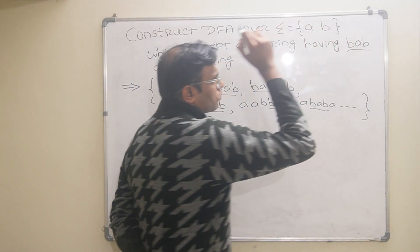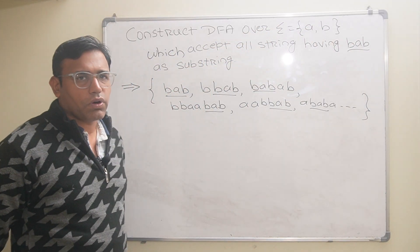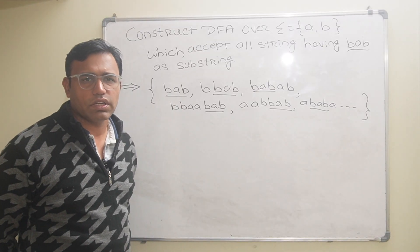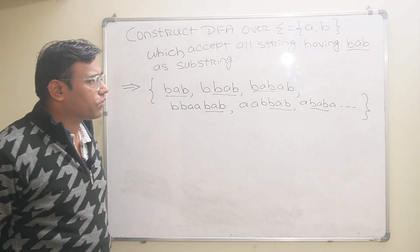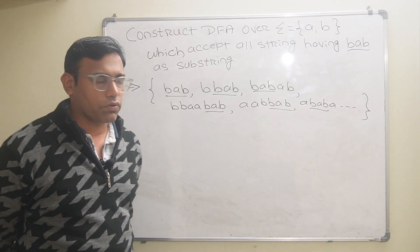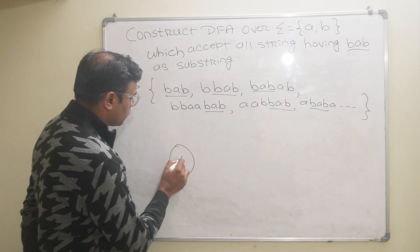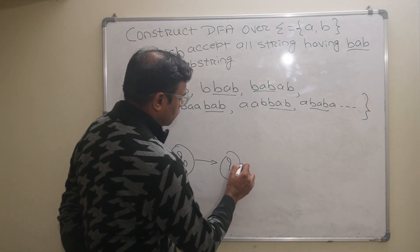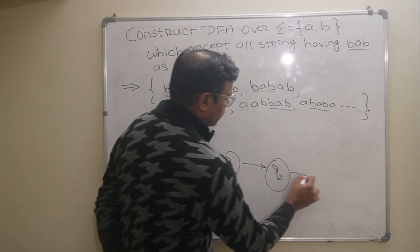As I mentioned in earlier videos, whenever there is a substring problem, the total number of states in the DFA will be the length of the substring plus 1. So the length of the substring BAB is 3, so the total number of states will be 4.